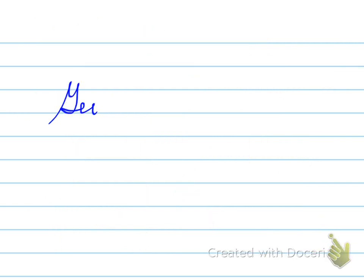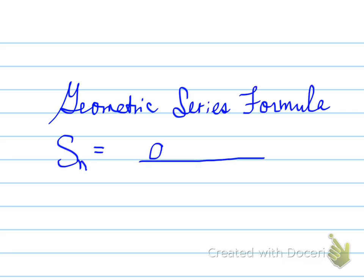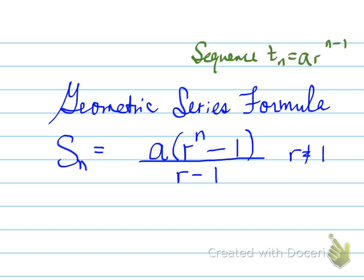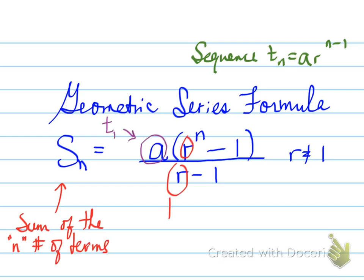Alright, let's go to the next one. A geometric series formula is as follows: Sn is equal to a bracket r to the n minus 1 over r minus 1, and that's provided that the r value is not equal to 1. Sn represents the sum of the first n number of terms. a represents the first term T1, the r's represent the common ratio, and the n represents the number of terms in the particular sequence that we're taking the sum of.